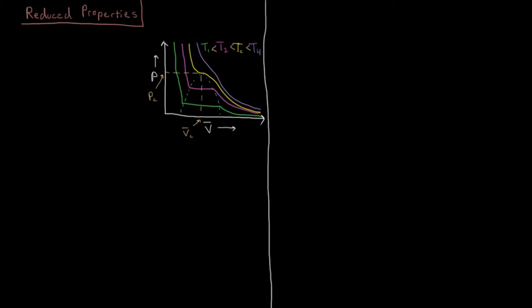In this video, we're going to look at reduced properties of gases and the law of corresponding states. In the previous video, we looked at critical points — the point where the first and second derivative of pressure with respect to molar volume was zero, giving an inflection point in the pressure versus molar volume graph at the critical temperature. This occurs at a specific critical pressure and a specific critical molar volume, and at that point you reach a supercritical fluid — neither a liquid nor a gas.